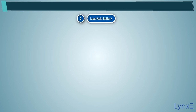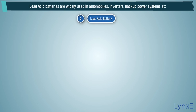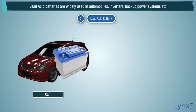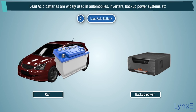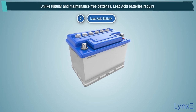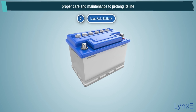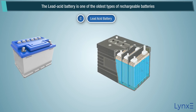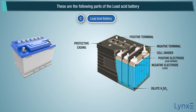Lead acid battery. These batteries are widely used in automobiles, inverters, and backup power systems. Unlike tubular and maintenance-free batteries, lead acid batteries require proper care and maintenance to prolong their life. The lead acid battery is one of the oldest types of rechargeable batteries. These are the following parts of the lead acid battery.